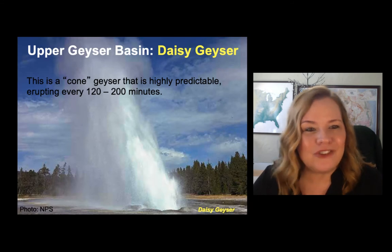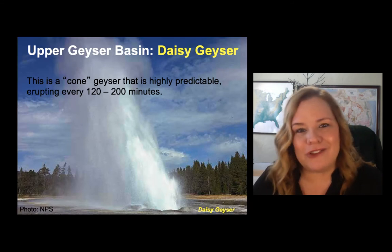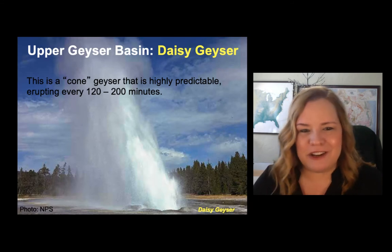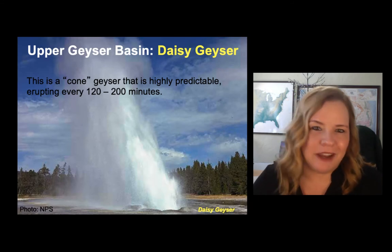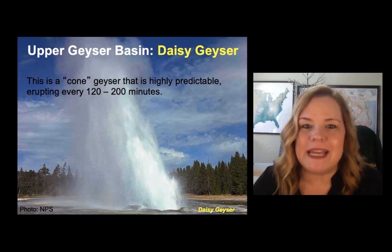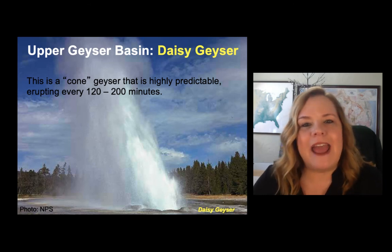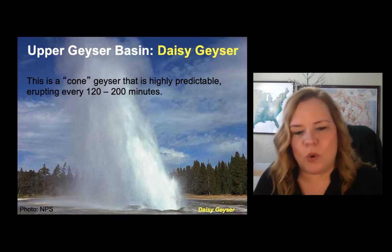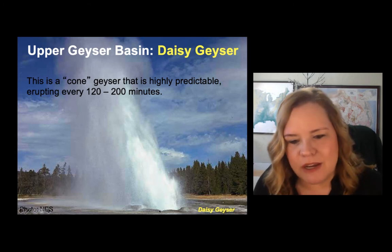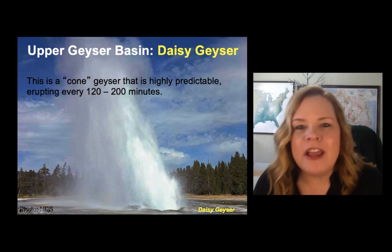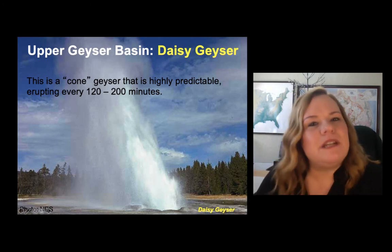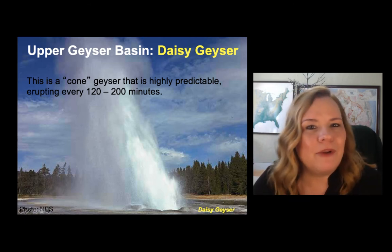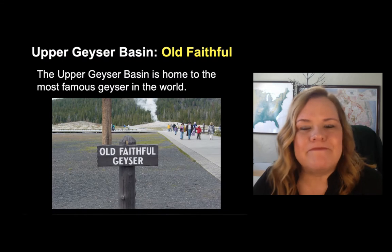Daisy Geyser is a cone geyser — very predictable. It erupts about every 120 to 200 minutes. Because of that, the cone is shooting it up. It's not a very big cone — very predictable, upper geyser basin.